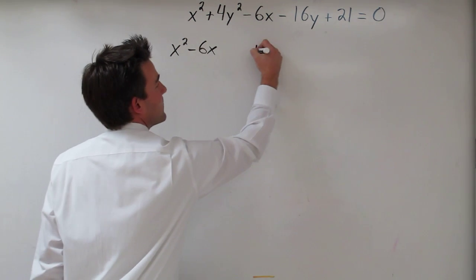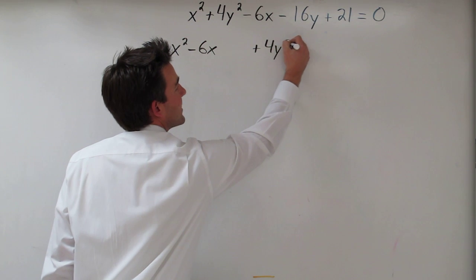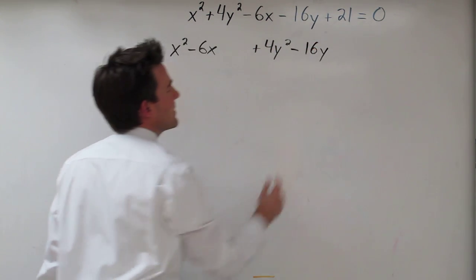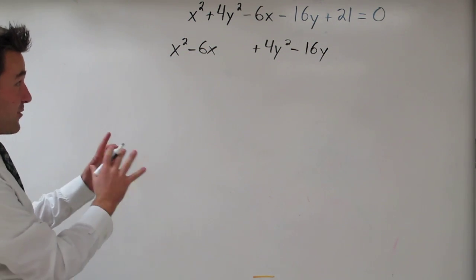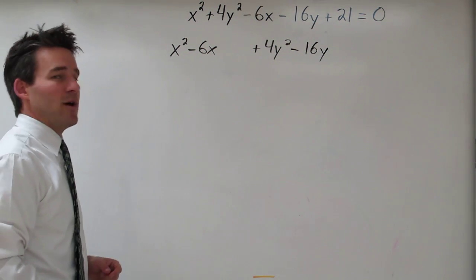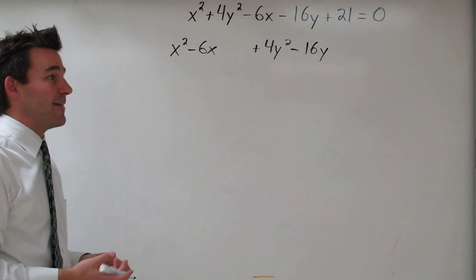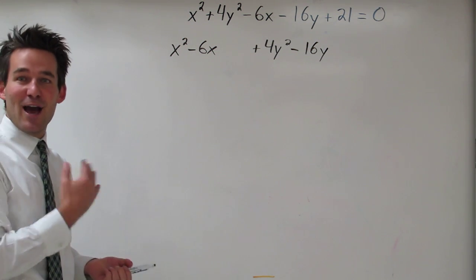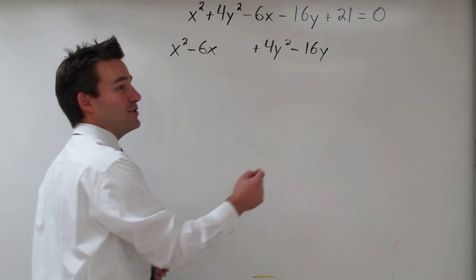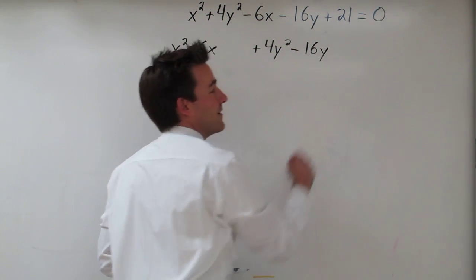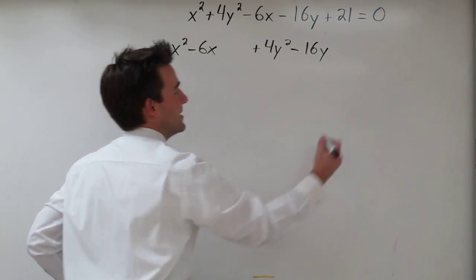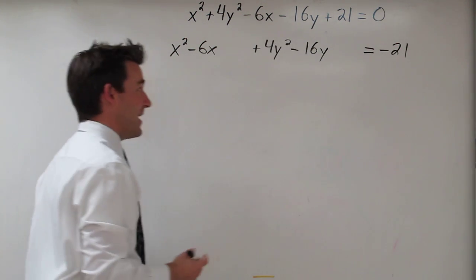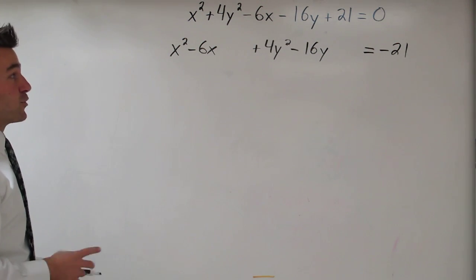That's all the x's. So then we go to y. We have plus 4y squared minus 16y. The only thing we have left that we haven't really moved around is that 21. It's a constant because it doesn't have a variable. We're going to want to move all the constants to the other side of the equation. So we can do that by subtracting 21 from both sides of the equation. So we're going to end up with a negative 21 on this side. Okay, we've grouped the variables.